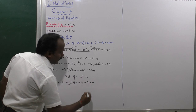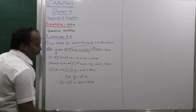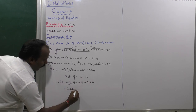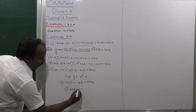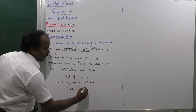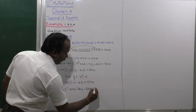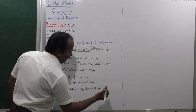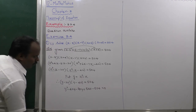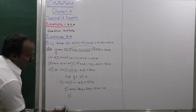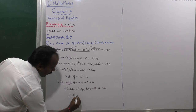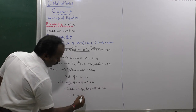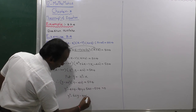Expanding by inside multiplication: y squared minus 42y minus 20y plus 840 equals 504. This simplifies to y squared minus 62y plus 840 minus 504 equals 0, giving y squared minus 62y plus 336 equals 0.